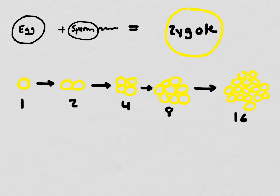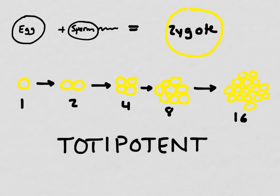In the first few stages of development and during the first few divisions, these cells are extremely powerful because any one of them could become whatever kinds of tissues or cells the organism might need. These cells are called totipotent cells.